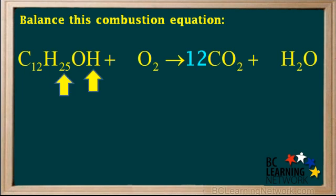On the left side, we have 25 plus 1, or a total of 26 hydrogen atoms. So we write a 13 in front of the water, because 2 times 13 equals 26. So we have 26 hydrogen atoms on both sides, and hydrogen is now balanced.